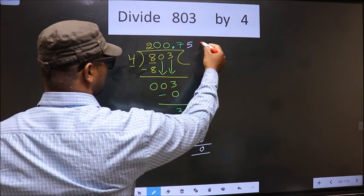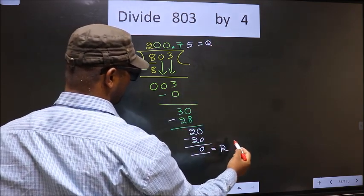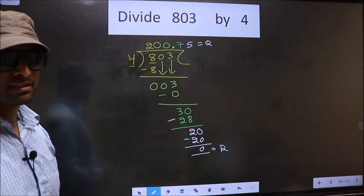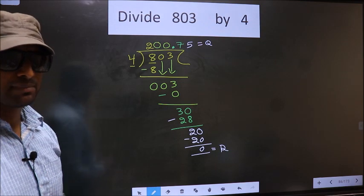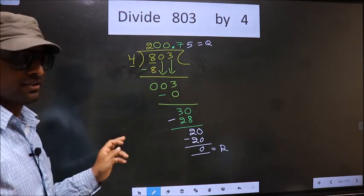So this is our quotient and this is our remainder. Did you understand where mistake happens? You should not do that mistake. Am I clear?